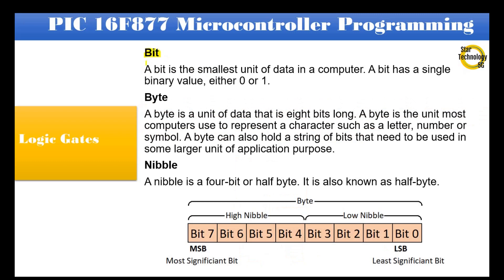Bit: A bit is the smallest unit of data in a computer. A bit has a single binary value, either 0 or 1. A bit is the smallest part of data — it should be 0 or 1.